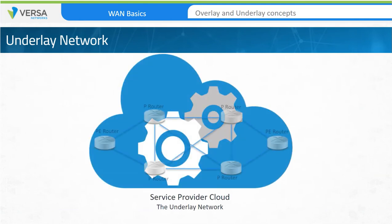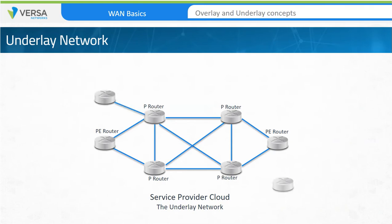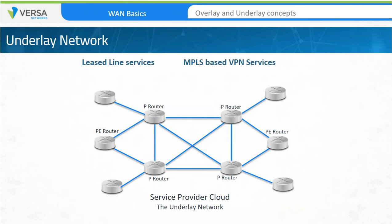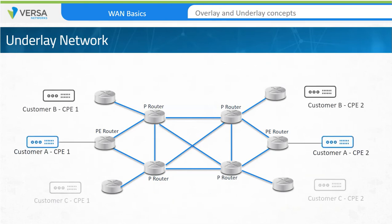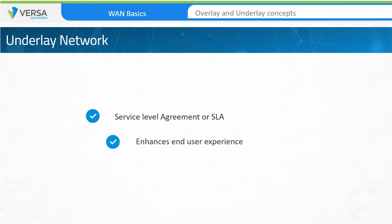The underlay network is the transport infrastructure that a service provider provides as a service. Service providers build a network infrastructure to carry multiple gigabytes of traffic and provide different services to end customers, such as leased line services, MPLS-based Layer 3 VPN, and so forth. The core infrastructure is shared among multiple customers. With the evolution of MPLS and MPLS-based services, service providers also provide service-level agreement, or SLA-based services. When an SLA is in place, the service provider guarantees under contract to provide a circuit with predefined performance guarantees.